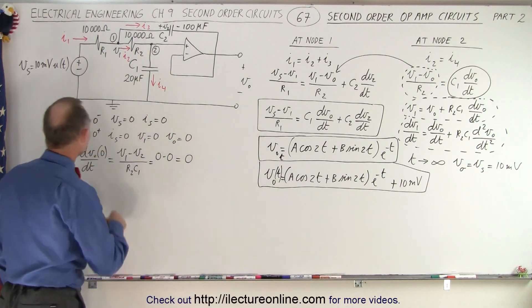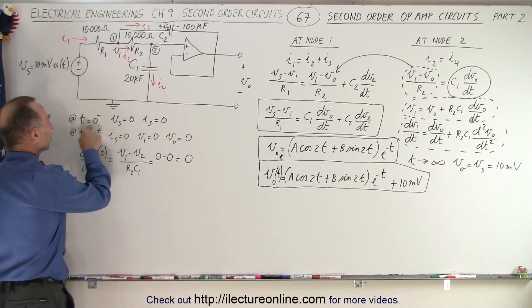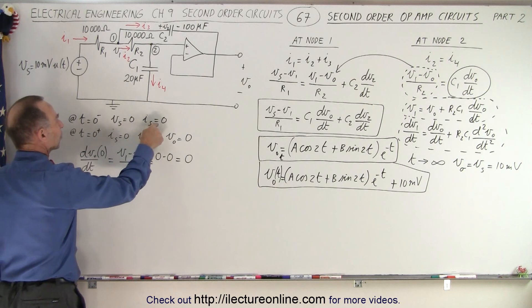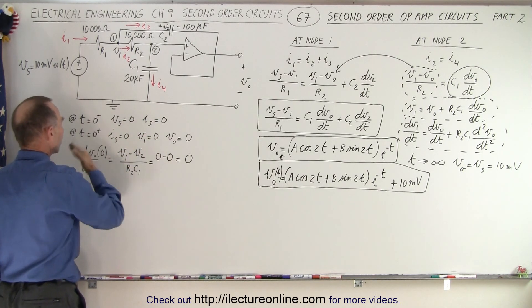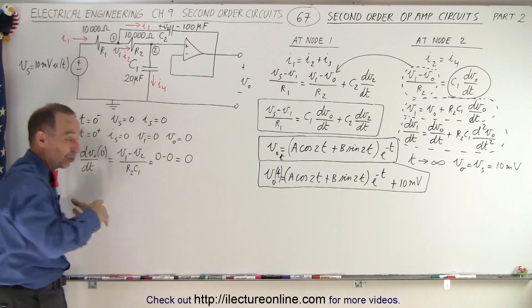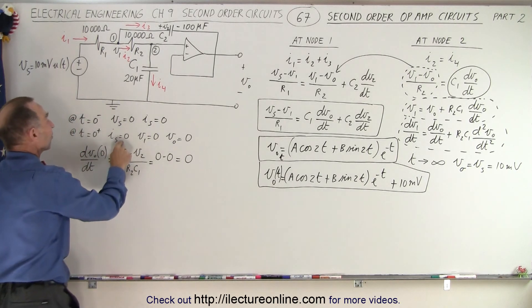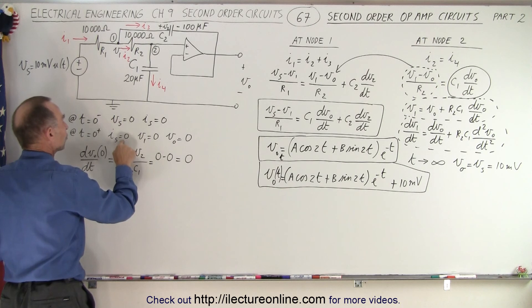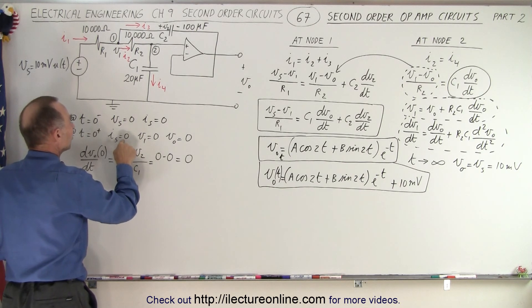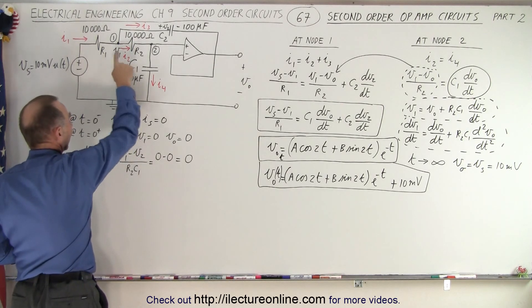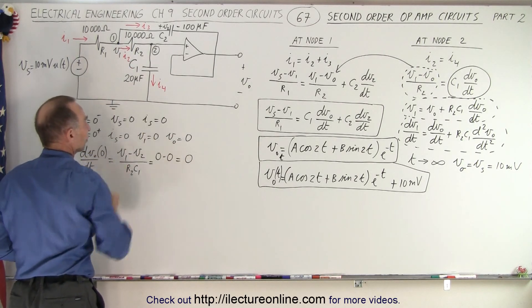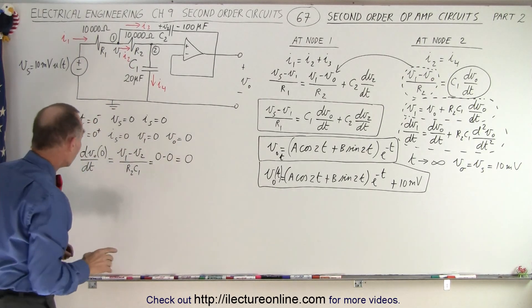So we go back and realize that before time goes to 0, the source is 0, and the current from the source is equal to 0. When time is past 0, when we just turn on the source, at that point, not enough time has gone by in order to change the current output, so the current output will be 0, and if the current output is 0, then V1 and the output voltage must be 0 as well.